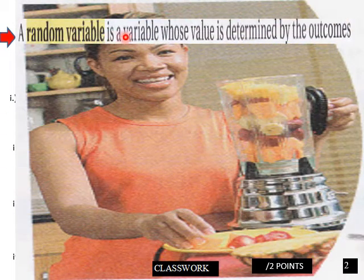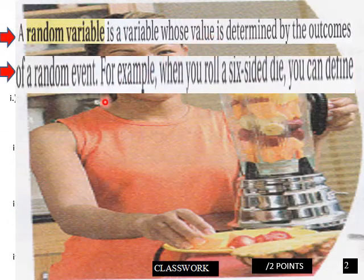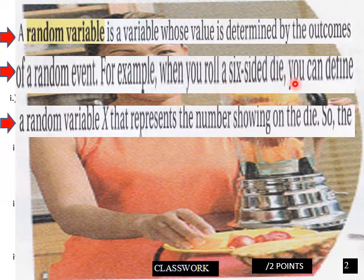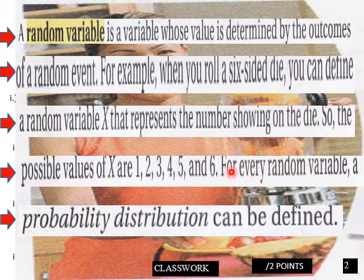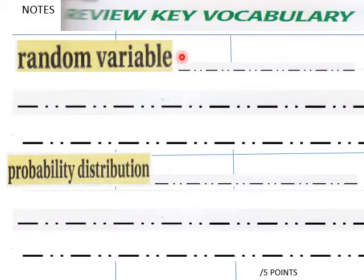A random variable is a variable whose value is determined by the outcomes of a random event. For example, when you roll a six-sided die, you can define a random variable X that represents the number showing on the die. So the possible values of X are here. For every random variable, a probability distribution can be defined, students. Define these in your own words now. This is a notebook entry, and I check those on Friday.